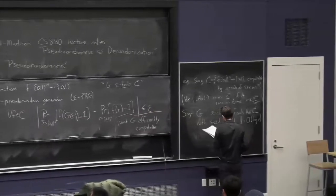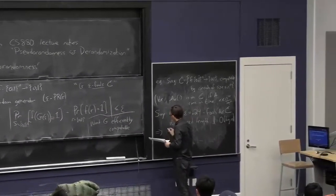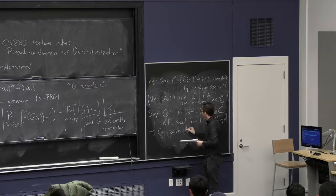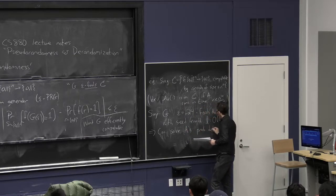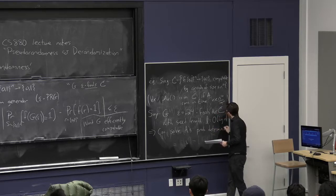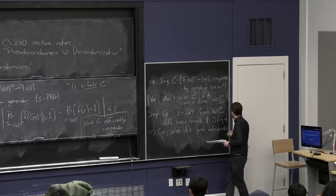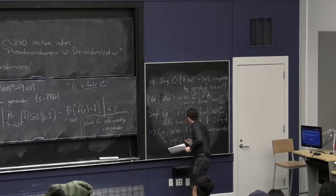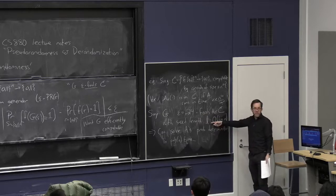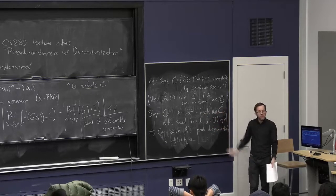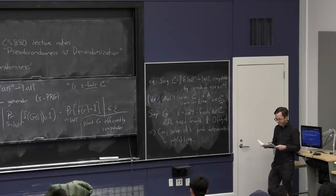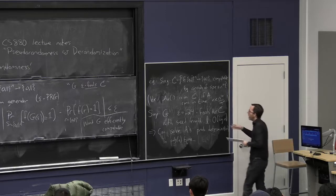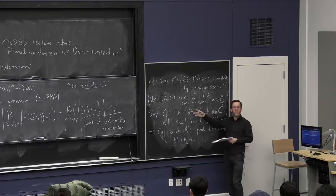So maybe that went a little bit fast, but to summarize what I just said, you can solve the problem that A is solving if this great pseudorandom generator exists. You can solve A's problem deterministically in polynomial time. Okay, and generally the time would be 2 to the seed length times the time it takes you to run A. Any questions about that? I didn't address why you might believe that such a G exists, but I'll talk about that in a moment. But if such a G exists, does it make some sense?